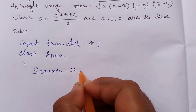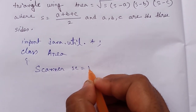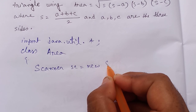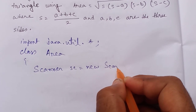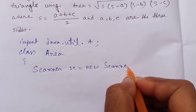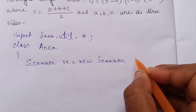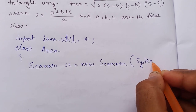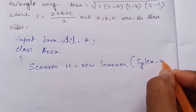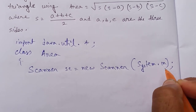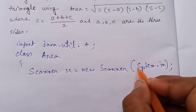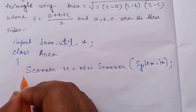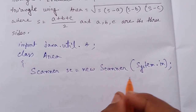Now I am doing the Scanner line: Scanner sc = new Scanner(System.in). Note that Scanner is capital, sc is lowercase — this is capital.